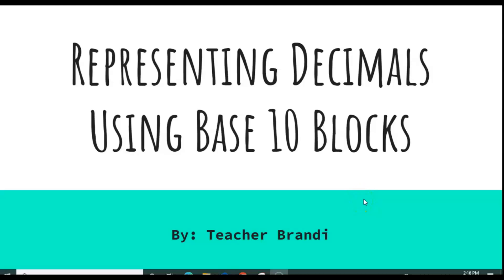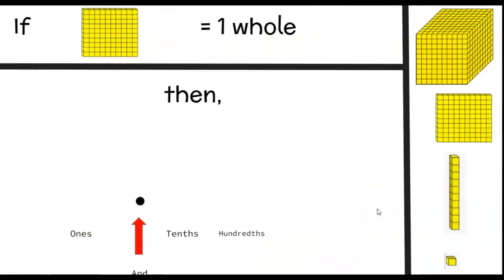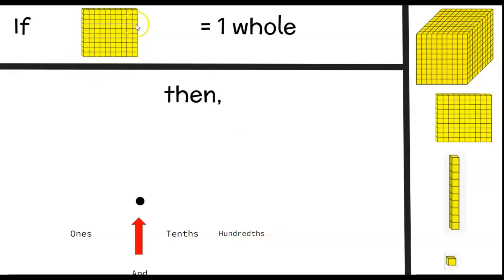Now let's start representing decimals using base 10 blocks. Your child may see a problem represented like this: if this base 10 block, which is the hundredths flat, equals one whole, then how do we represent the tenths, the hundredths, and essentially the thousandths place when given that this base 10 block is now one?